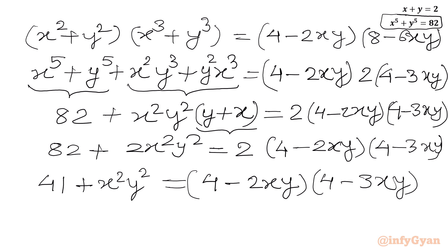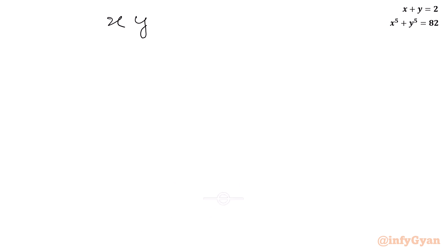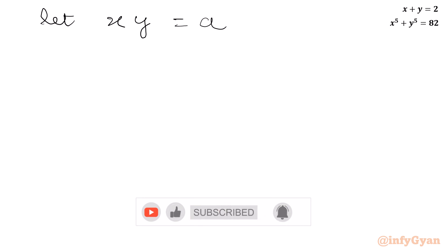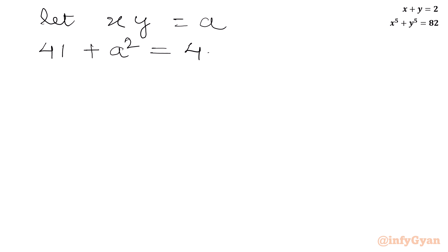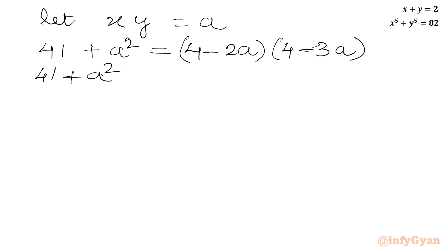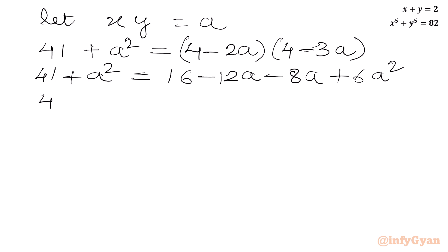Now I will consider xy equal to A. As you can see, we have xy whole square and xy, so let's say xy equals A. The equation will become 41 plus A squared equal to 4 minus 2a times 4 minus 3a. Let's expand the RHS: 41 plus A squared equals 16 minus 12a minus 8a plus 6a squared.